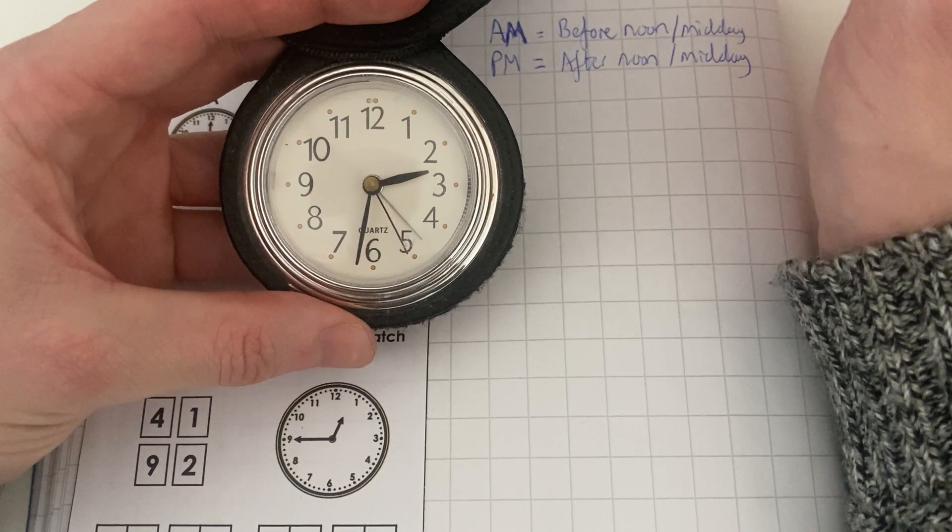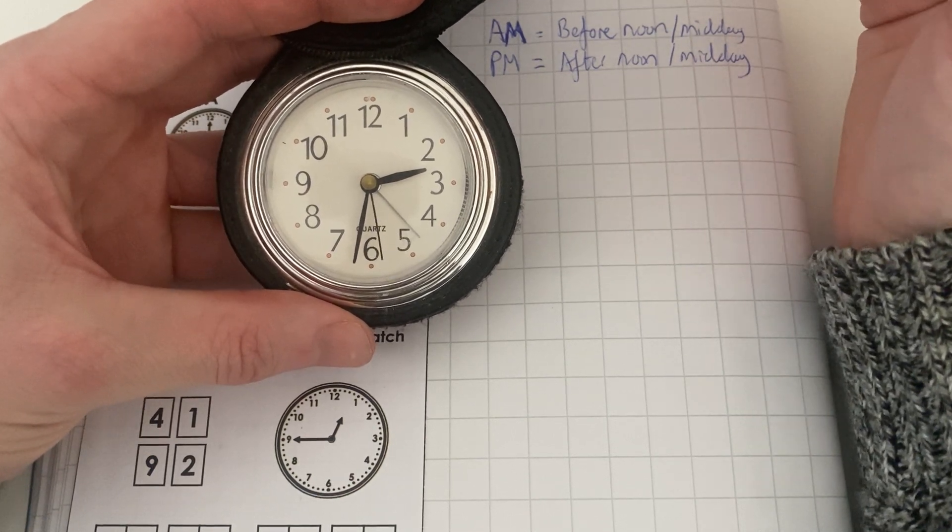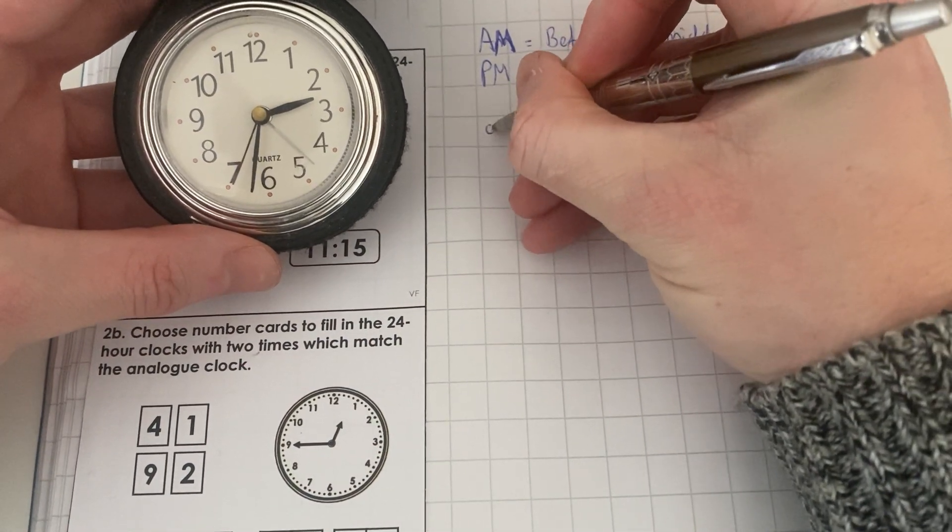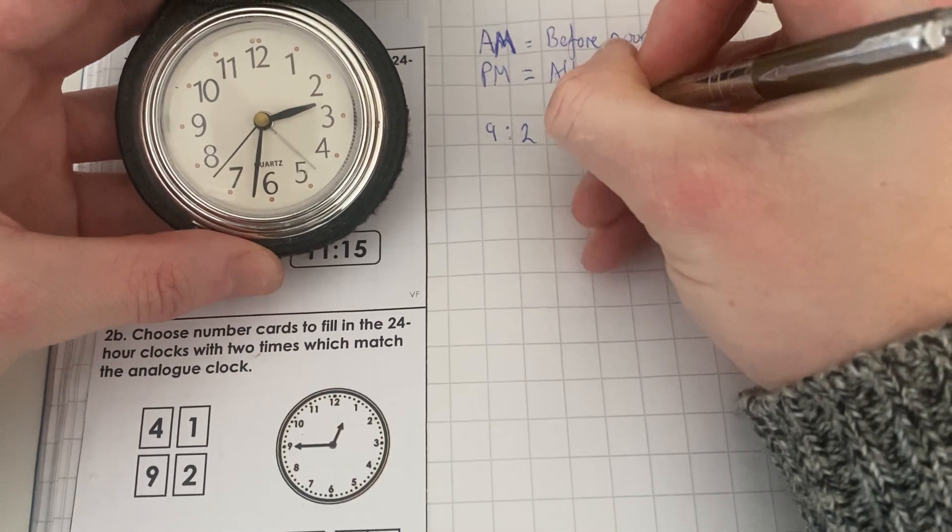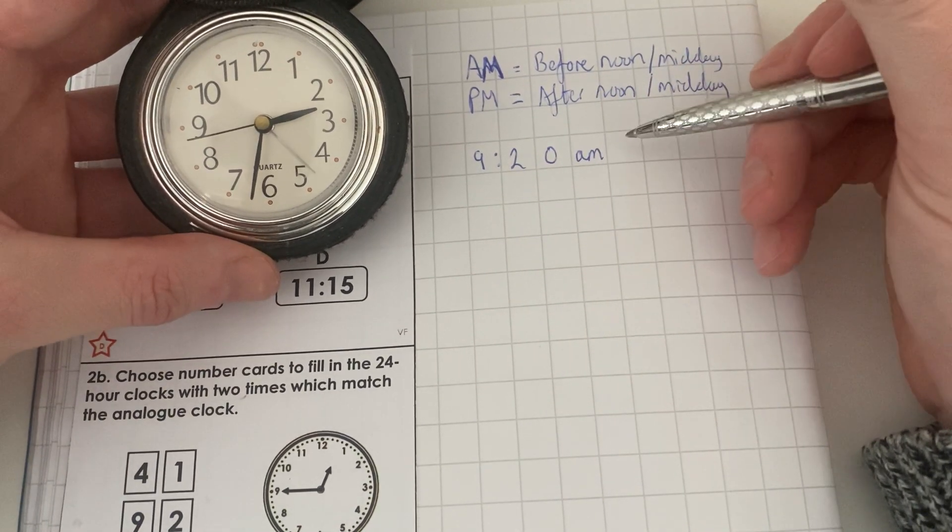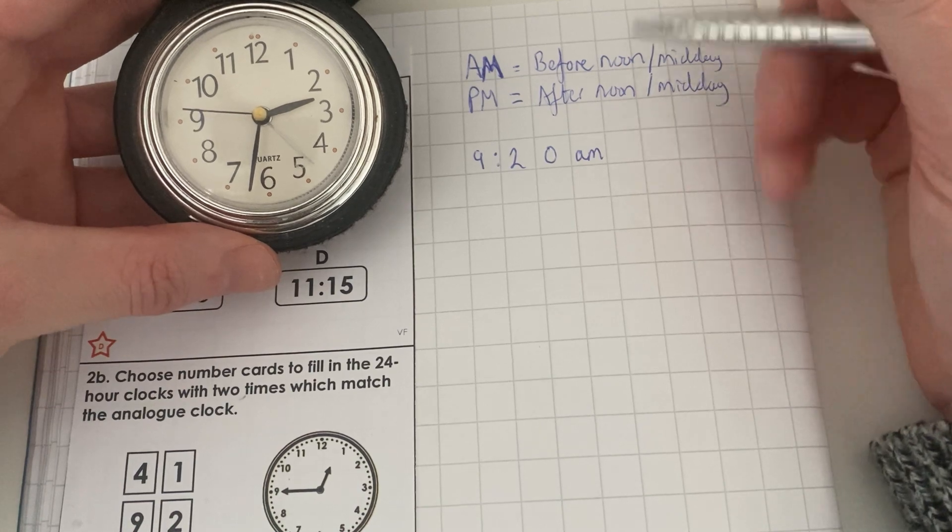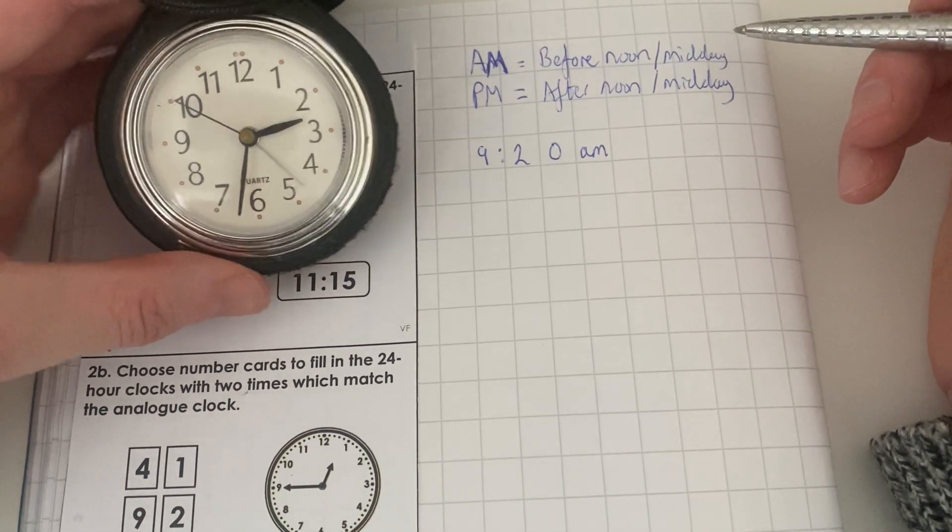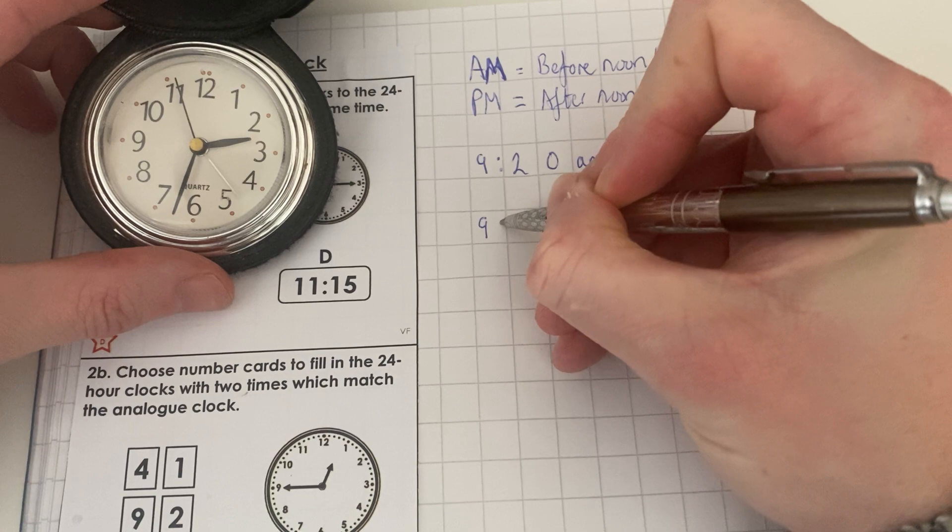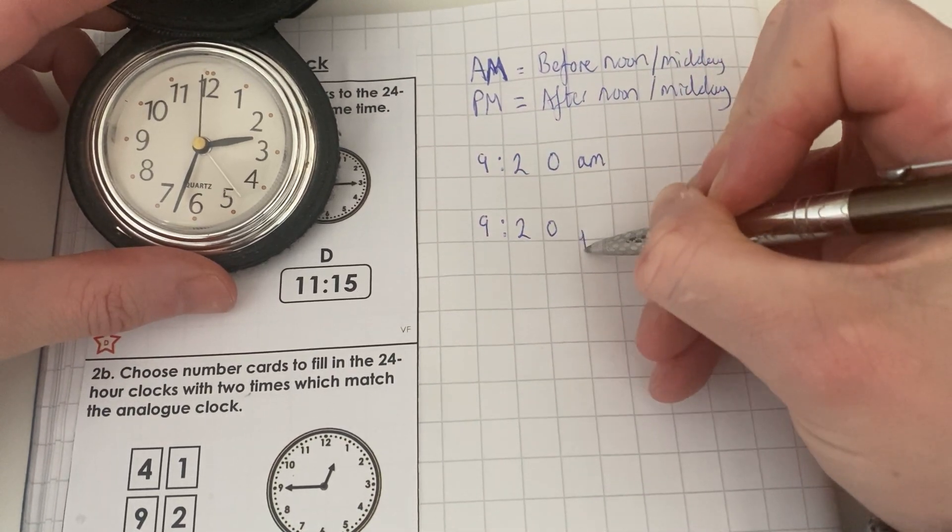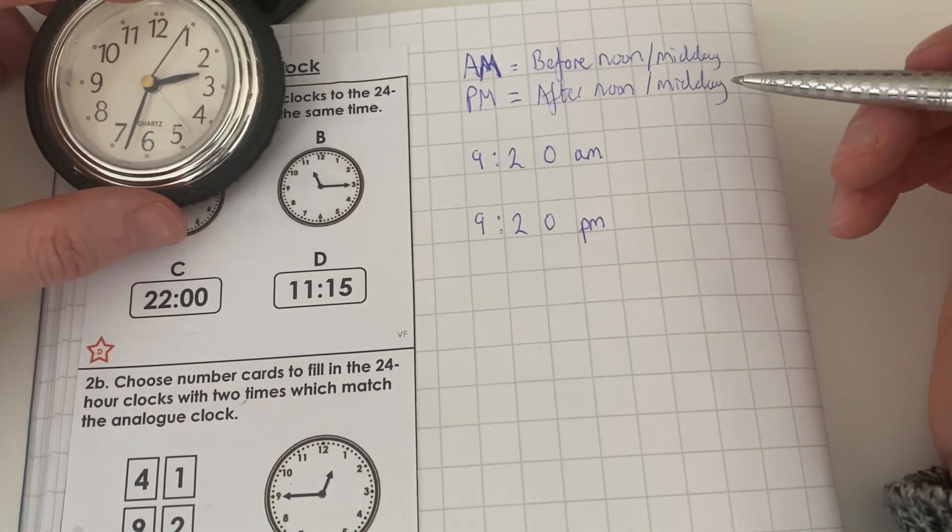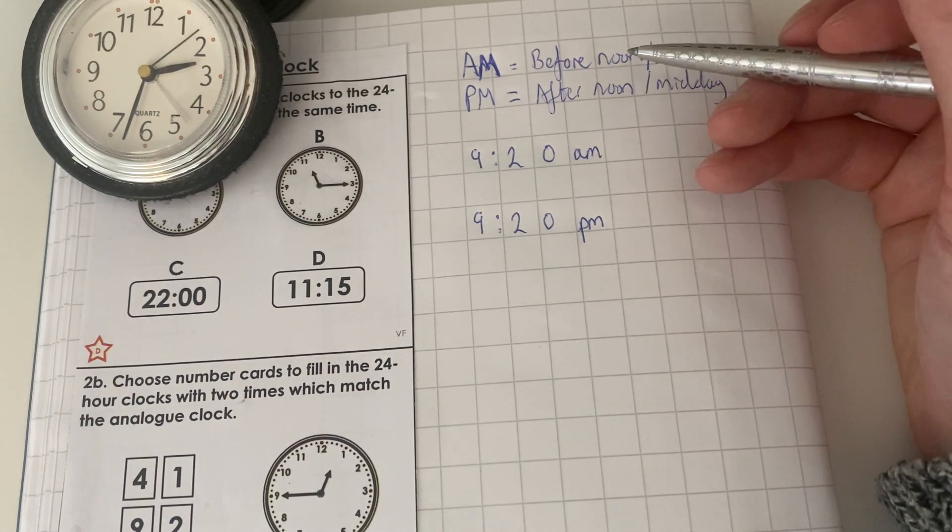Now, when we write our times, we can be given times on an analogue clock. So if it was 9:20 in the morning, we would write 9:20 on an analogue clock. And we would put AM afterwards. This stands for ante-meridiem. But what this means is that the time is before noon or midday. If it was in the afternoon, so this was at night time, 9:20 at night, we would put PM. And that's post-meridiem or afternoon or midday. This tells us that this time has gone past midday.